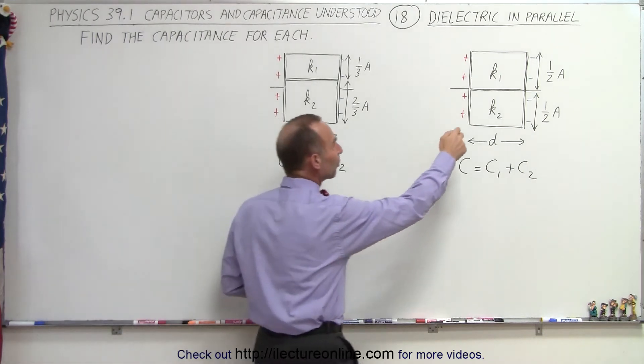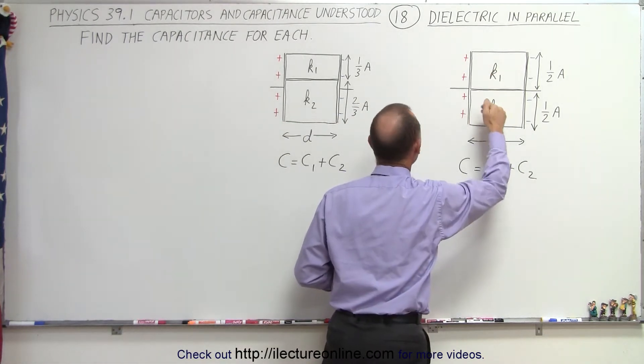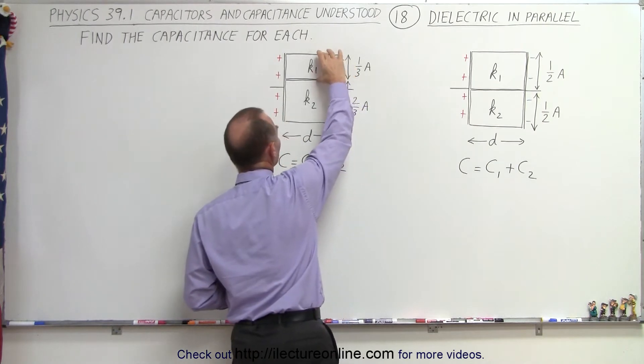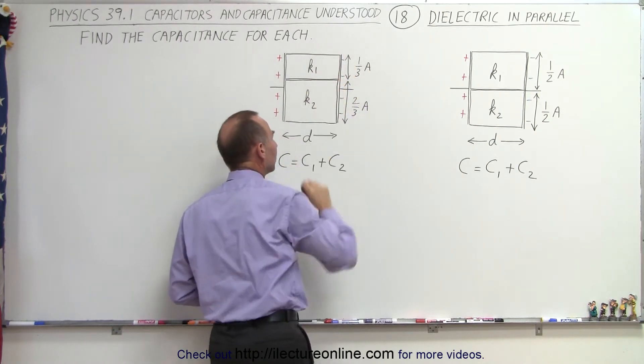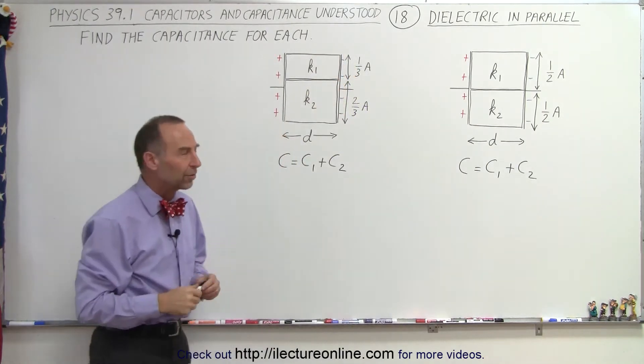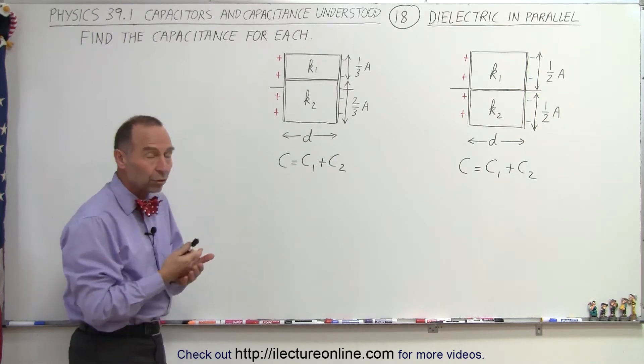In the first case we have an equal size in each case. Here we have one that's only one-third the size of the total capacitor and there's a two-thirds the size of the whole capacitor. So how do we find the total capacitance?